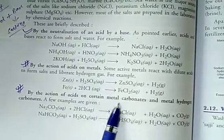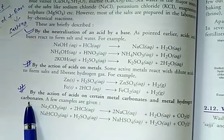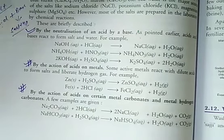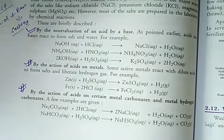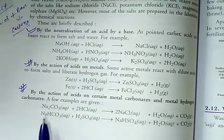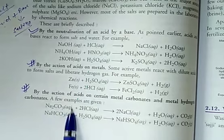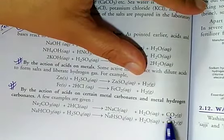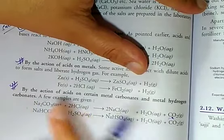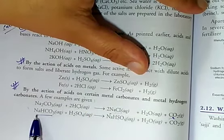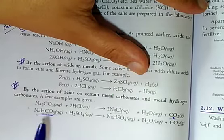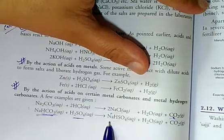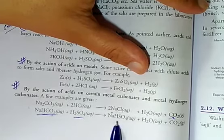Salts can also be prepared by the action of acids on certain metal carbonates and metal hydrogen carbonates. For example, sodium carbonate reacts with acid to give NaCl + H₂O + CO₂ gas. Similarly, sodium bicarbonate (sodium hydrogen carbonate) reacts with acid to form sodium sulphate (a salt) plus water plus CO₂ gas.